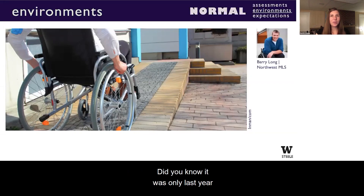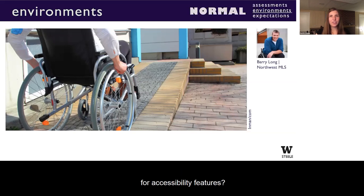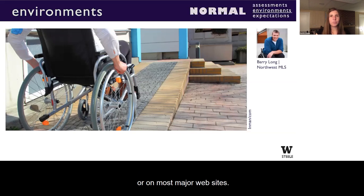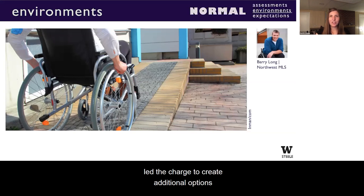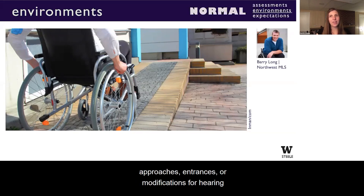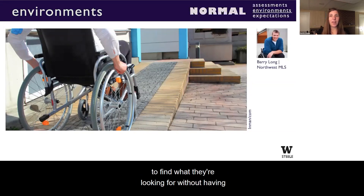Did you know it was only last year you could search real estate listings for accessibility features? And it is still not available through most of the U.S. or on most major websites. Very Long and partners with Northwest MLS led the charge to create additional options for new listings to specify features such as accessible approaches, entrances, or modifications for hearing and vision, making it easier for home buyers to find what they are looking for without having to visit each home.